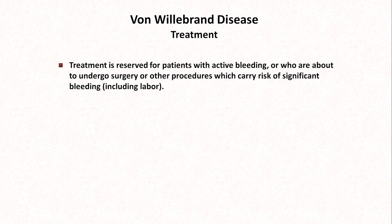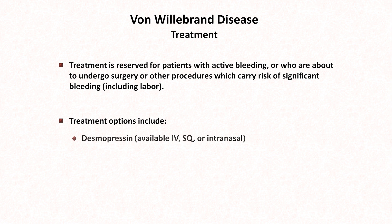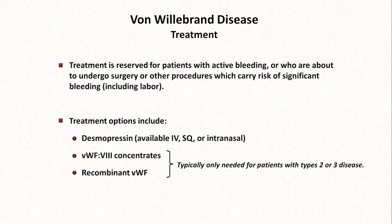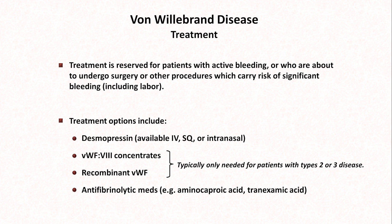Treatment for von Willebrand disease is usually reserved for patients with active bleeding or who are about to undergo surgery or other procedures carrying risk of significant bleeding, including labor. Management of pregnancy in patients with symptomatic von Willebrand disease is preferably handled in consultation with a hematologist at a center experienced in high-risk pregnancies. Treatment options include desmopressin (also known as DDAVP), available in IV, subcutaneous, or intranasal routes. Other options include concentrates of von Willebrand factor and factor VIII, as well as recombinant von Willebrand factor, typically only needed for type II and III disease. Antifibrinolytic medications such as aminocaproic acid and tranexamic acid are also sometimes used.